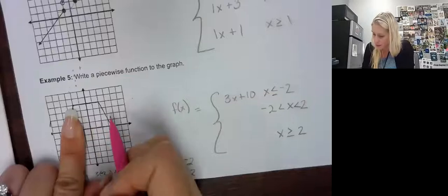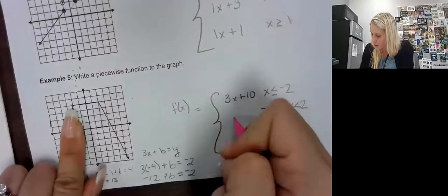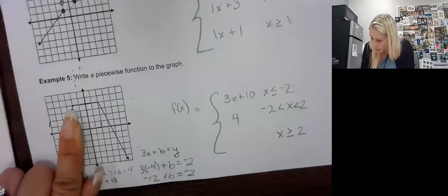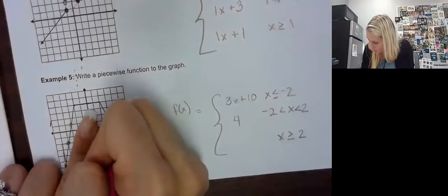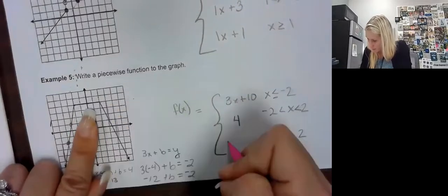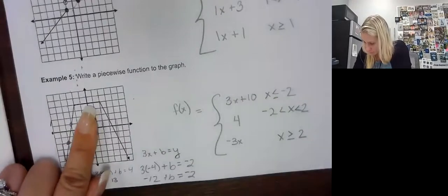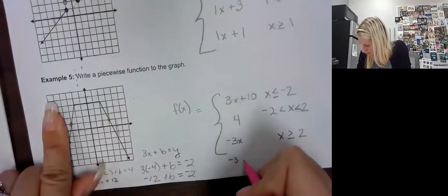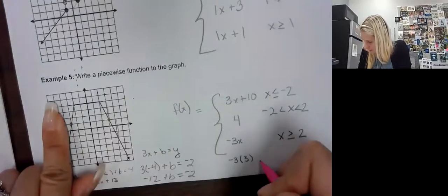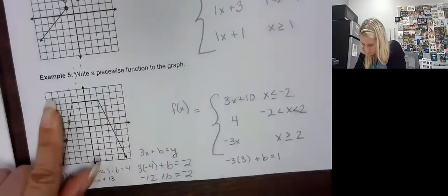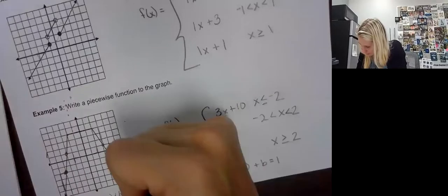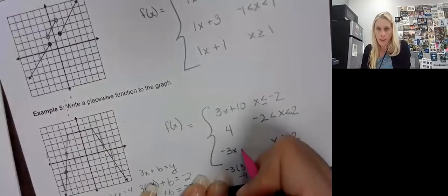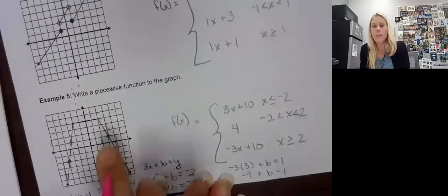The second piece is constant, so it's just at 4 — there is no x because that would create a slope. It's horizontal at 4. And then the third piece has a slope of negative 3. Let's plug in the point (3, 1): negative 3 times 3 plus b equals 1, so negative 9 plus b equals 1, giving b equals 10. So the function is negative 3x plus 10. And we are all done. Be careful going backwards — it's a little bit harder, and that's why this is an honors topic.